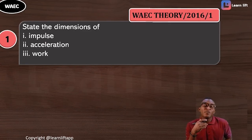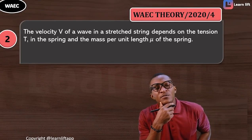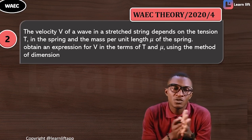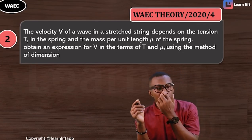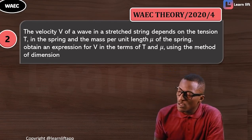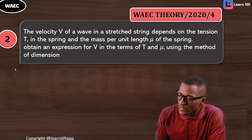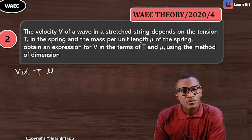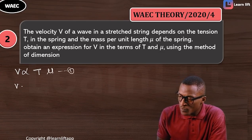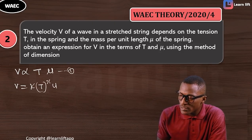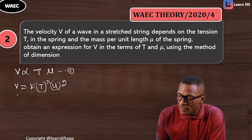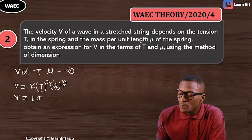Now let's take another question. We're given that the velocity of a wave in a string depends on tension T of the string and the mass per unit length μ of the string. Obtain the expression for v in terms of T and μ using the method of dimensions. First, v depends on tension and also depends on mass per unit length. From this we can write v = k · T^x · μ^y. Now I'm going to find the dimension for all values. v is velocity, so its dimension is LT⁻¹.